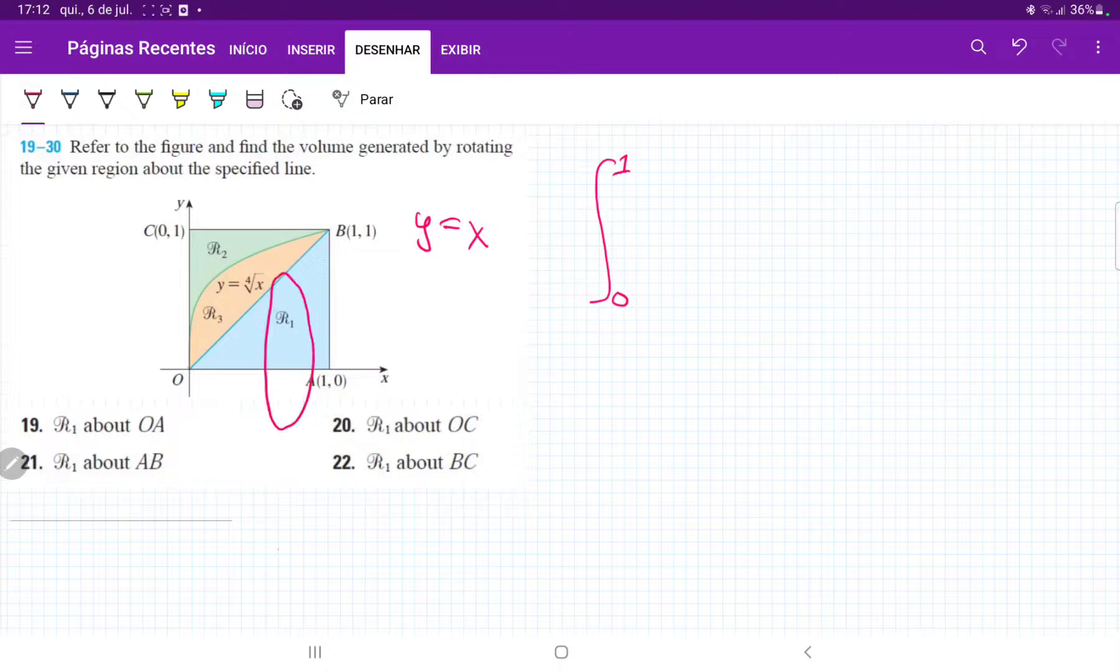Therefore, the radius of each of these circles is just x. So these circles have the area of pi x squared. So what we're doing is we're summing up these areas from 0 to 1. So we have pi x squared dx.